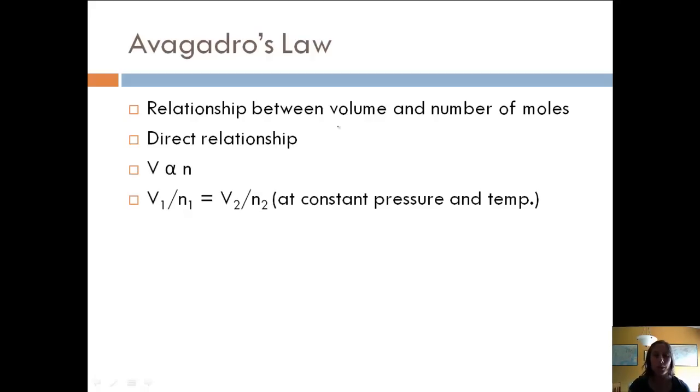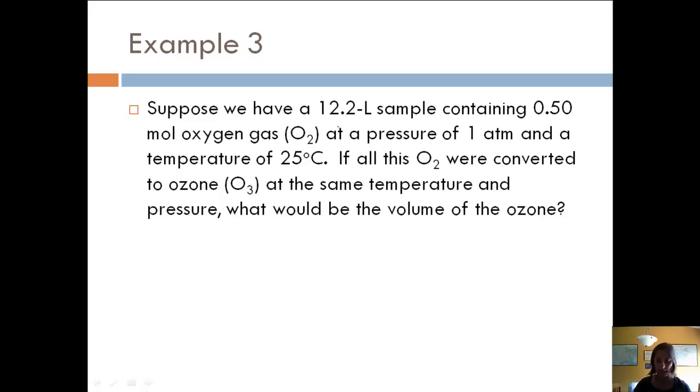So similar type of equation as with Charles' Law, V1 over N1 equals V2 over N2. Remember, everything else needs to be constant, so constant pressure, constant temperature. So let's look at an example.